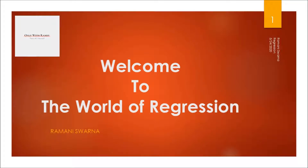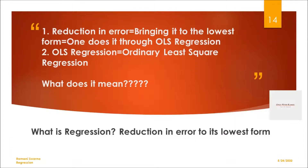Good evening friends. In the last video I discussed about the reduction and not eliminating the errors. Now, how are you going to do the reduction in errors? The correct way of writing is 'reduction in error,' however in spoken English we will say 'reduction for errors.' The technical jargon is to bring it to the lowest form. How do you reduce the errors? By bringing them to their lowest form.